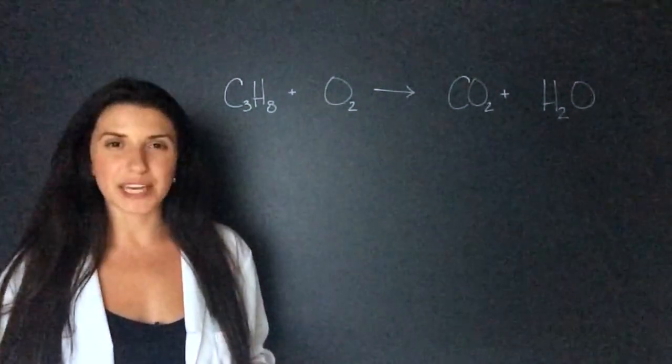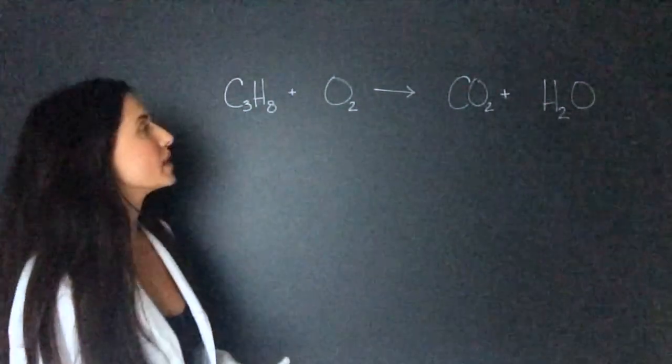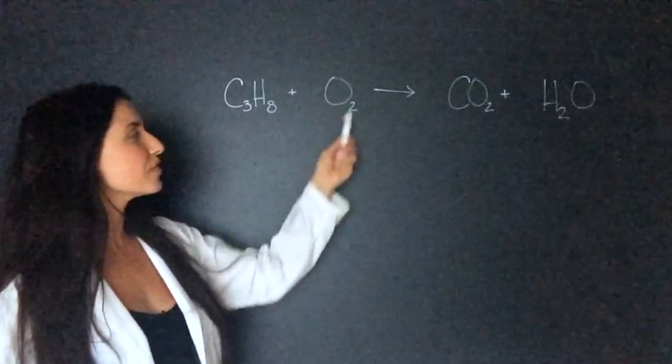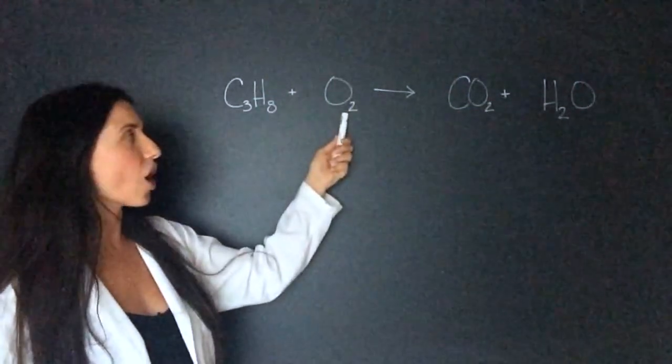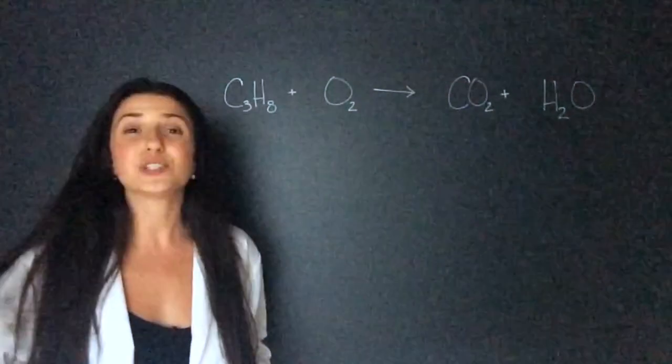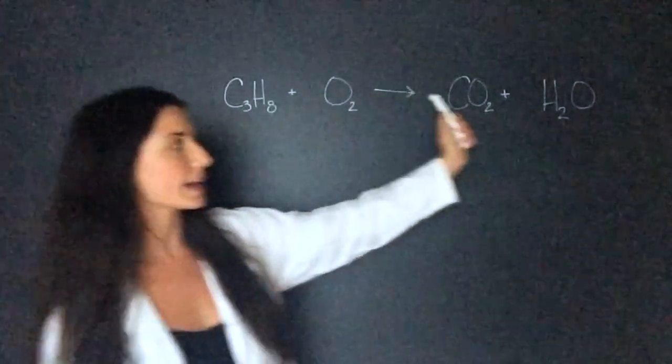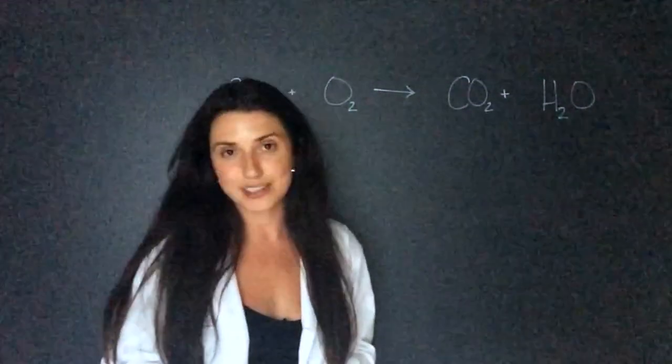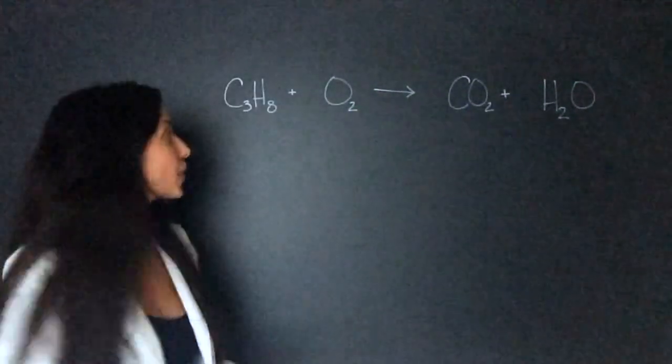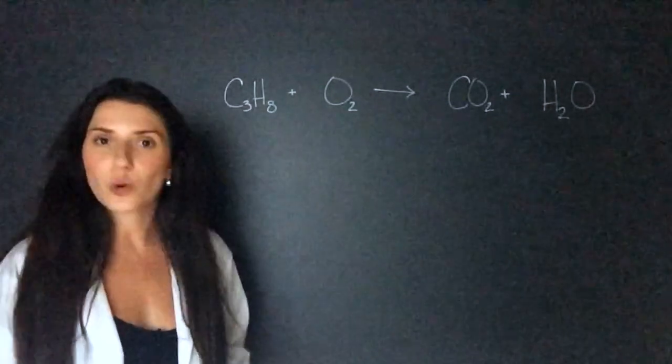When I do more complicated balancing problems, I always make sure that whatever is on its own, in this case the oxygen is on its own, I do that one last because that's going to be the easiest to balance because I don't affect other molecules in the process. What we'll do to start is write out what elements are present and their quantity.